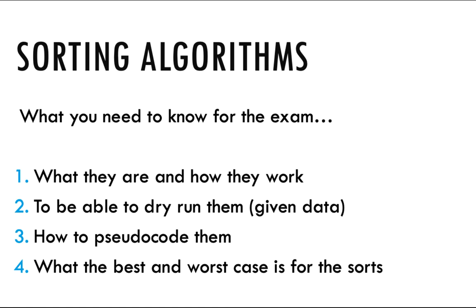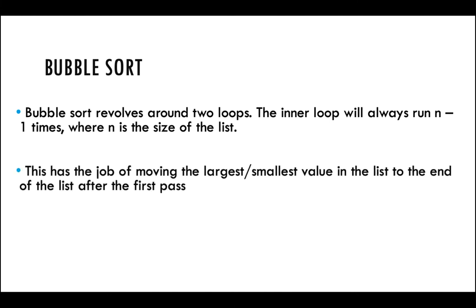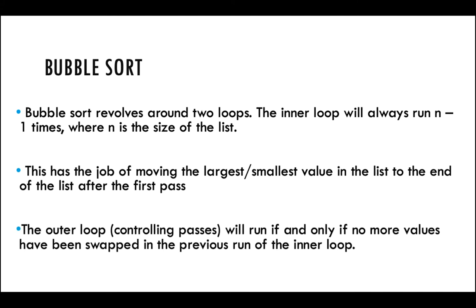We're going to jump straight in with the bubble sort. The bubble sort is a very simple algorithm and it revolves around two loops. The outer loop controls the passes and the inner loop controls the swaps made in the array. A list is referred to as n in its size, and it will always run n minus one times because if you had an array of one element then you can say that that's already sorted. The bubble sort moves the largest or smallest values to the end of the list one after another. After the first pass the largest or smallest element will always be at one end — this is the notion of the biggest or smallest numbers bubbling up to the top. Finally, to confirm the array is sorted, a final pass is made and if no swaps are done on that pass then the array is sorted.